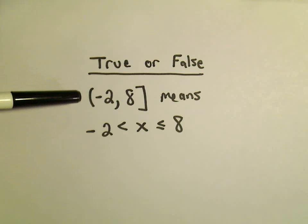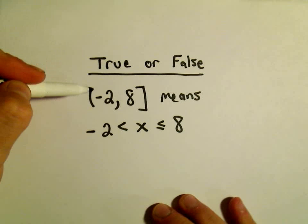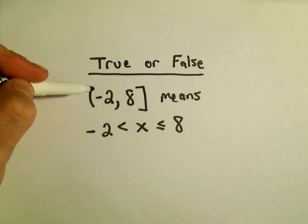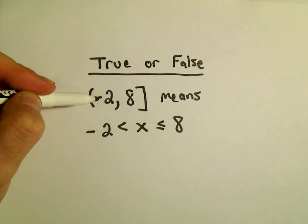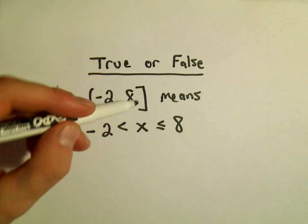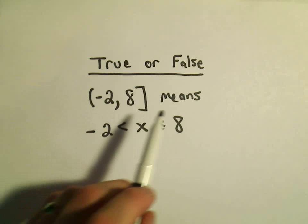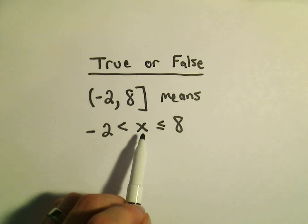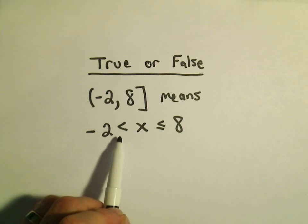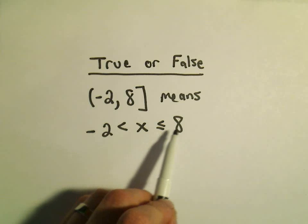Okay, in this example we just want to make a connection between interval notation and compound inequalities. And the question is, when we write in parentheses negative 2 comma to 8 with a bracket, does that mean the same as all the values of x that are greater than negative 2 but less than or equal to 8?